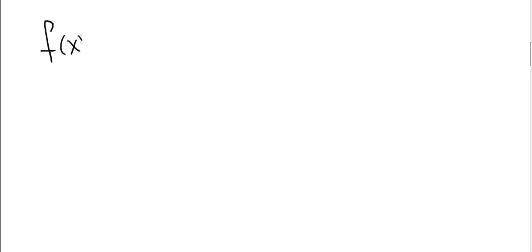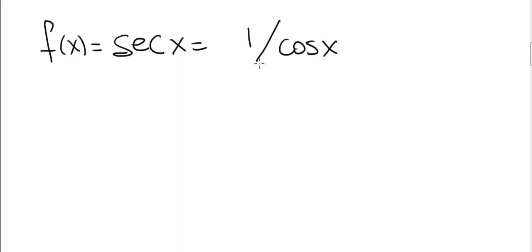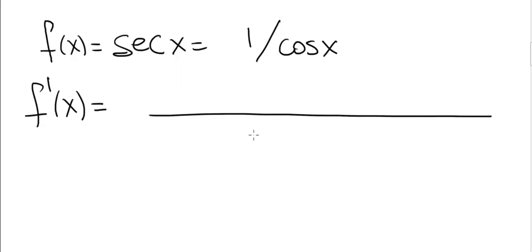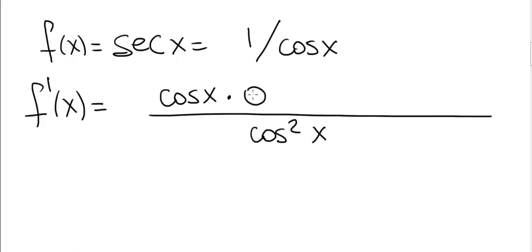We're going to differentiate f of x equals secant x. Recall that secant is 1 over cosine of x, so we're going to use the quotient rule. The derivative of a quotient of two functions: square the denominator — it becomes cosine squared — then the denominator cosine of x times the derivative of the numerator. The numerator is 1, its derivative is 0, minus the numerator times the derivative of the denominator.